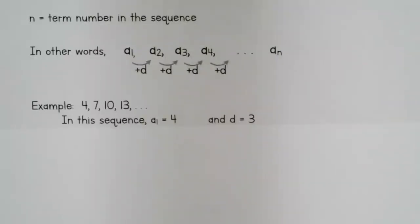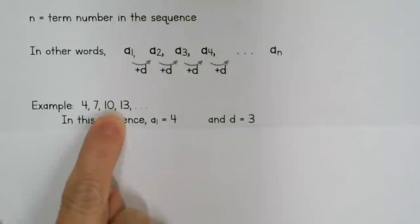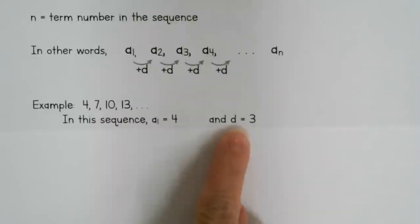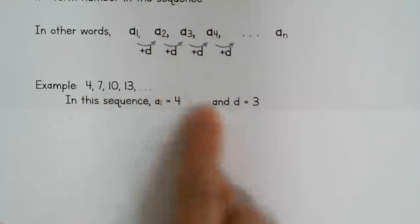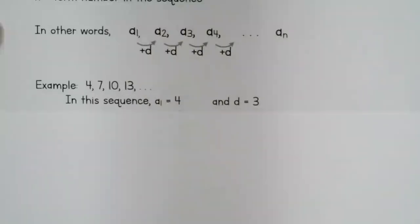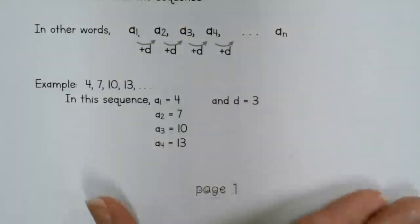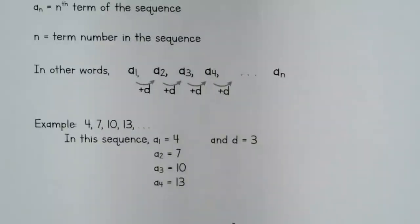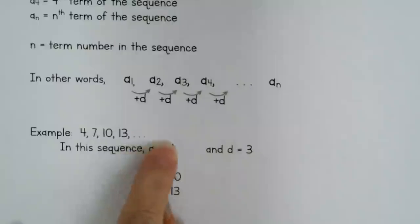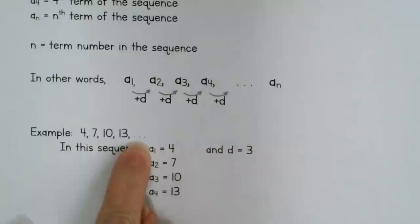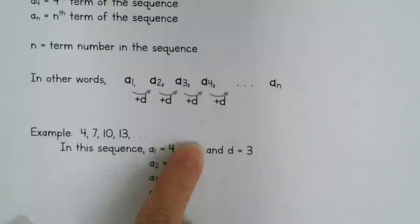In this example we have the sequence 4, 7, 10, 13. First off, yes, this is an arithmetic sequence — I know because there's a pattern of adding three each time. That pattern of adding three is the value of d, our common difference. So: a1 is 4, a2 is 7, a3 is 10, and a4 is 13. If asked to give the next three terms: add three to get 16, add three to get 19, add three to get 22.